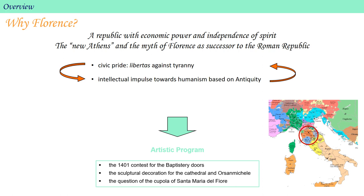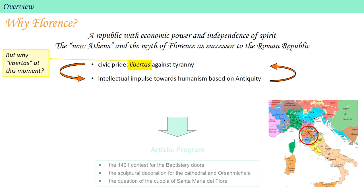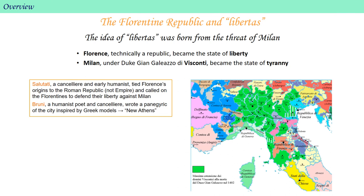This zeitgeist, or mood of the times, led to an artistic program where publicly sponsored art included: first, the 1401 contest for the baptistry doors in Florence; second, the sculptural decoration for the Florentine Cathedral and the Orsa Michele Church; and third, a robust attempt to engineer a giant cupola for the Florentine Cathedral, Santa Maria del Fiore, which had proved technically impossible up to that time. But why were the Florentines celebrating the sense of libertas at this moment, and how did they come by antique models for their ideas of liberty, and why is humanism the result of it all?